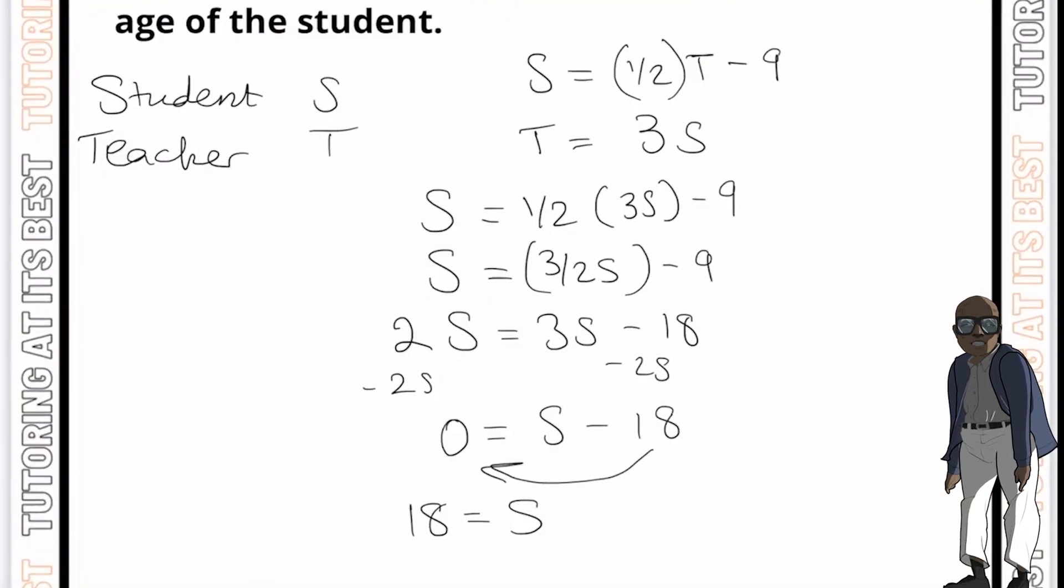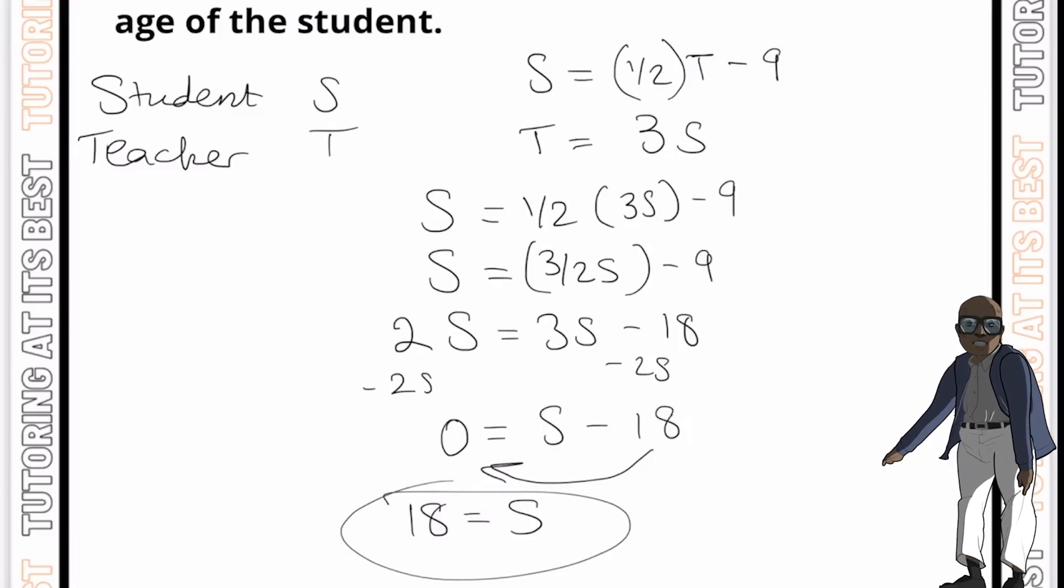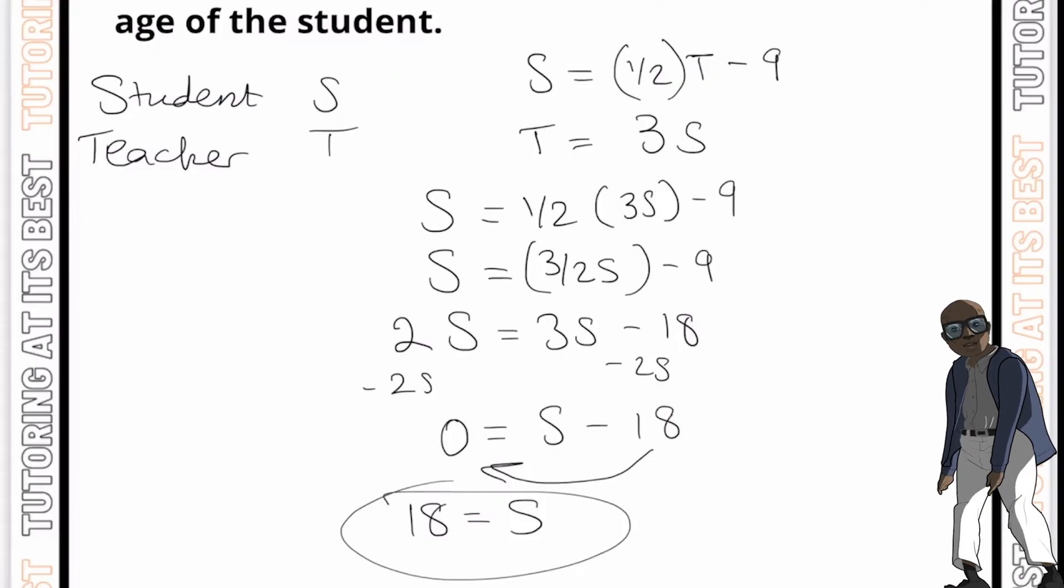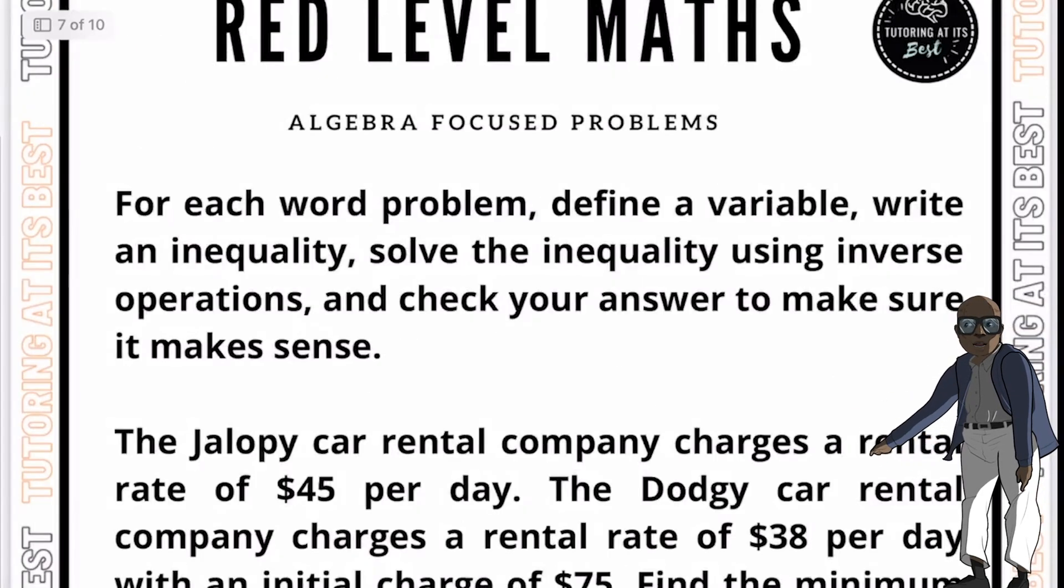And so by doing this, we know that the student is 18 years old. So what have we learned here? Well, we've learned to read the problem carefully. And it's important to read the problem thoroughly and make sure you understand what it's asking for. Underline key information and identify what you need to find. And this will help you stay focused and avoid making careless mistakes. And with that in mind, let's go into the next question.